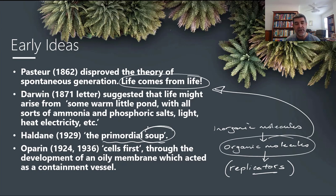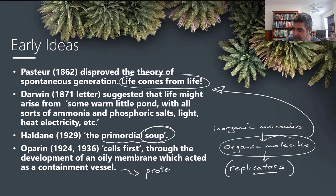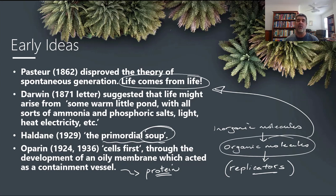Oparin talked about cells first through the development of some sort of a membrane, which acted as a containment vessel. All of these ideas about early life still required a very important chemical, and that was a protein. We know in our own bodies that proteins have a huge range of different functions — they're structural, they're used for transport, they're enzymes that catalyze different types of chemical reactions. They're also a key component in the cell membrane, separating the internal from the external. So proteins were a critical first start on this idea of organic evolution.